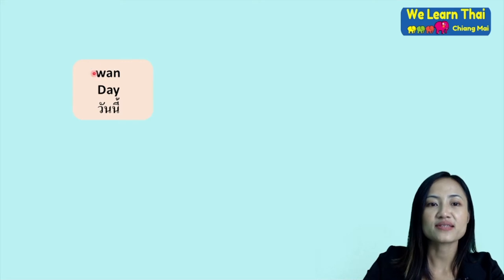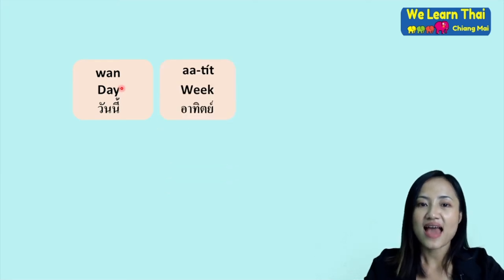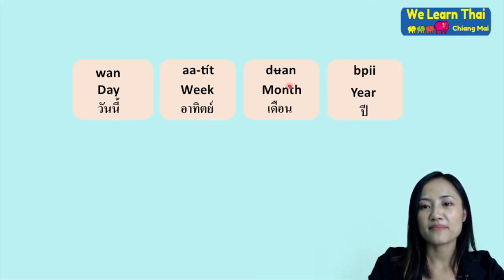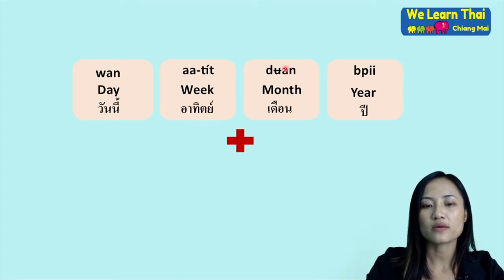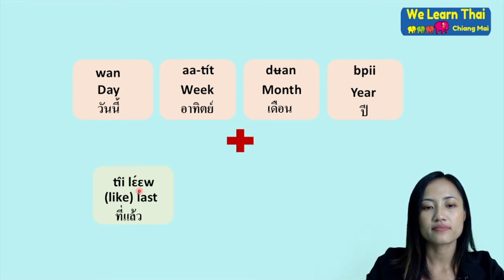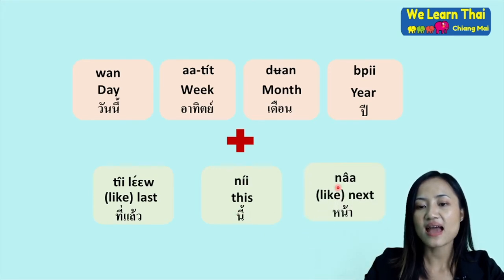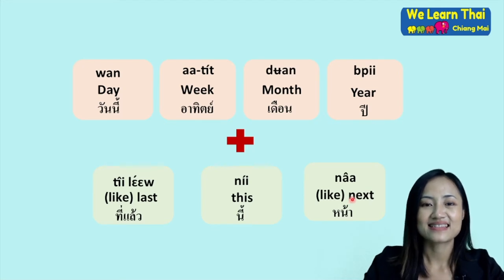More vocabulary here: วัน (wan) — day; อาทิตย์ (athit) — week; เดือน (duan) — month; ปี (pì) — year. Now we will combine these four words with modifier words: ที่แล้ว — meaning 'last' or 'ago'; นี้ — meaning 'this'; หน้า — meaning 'next.'